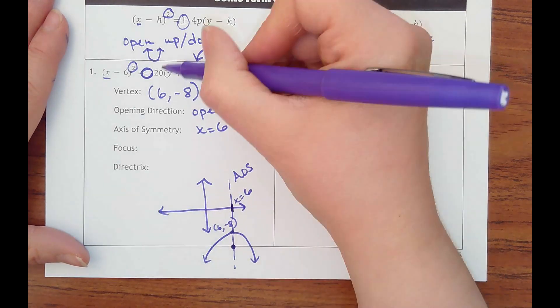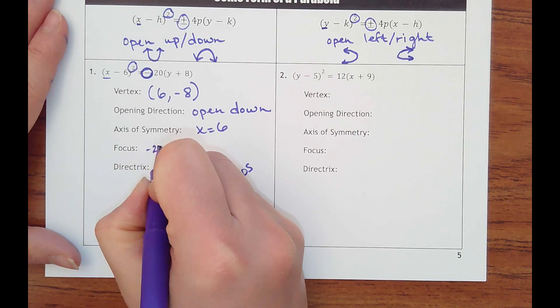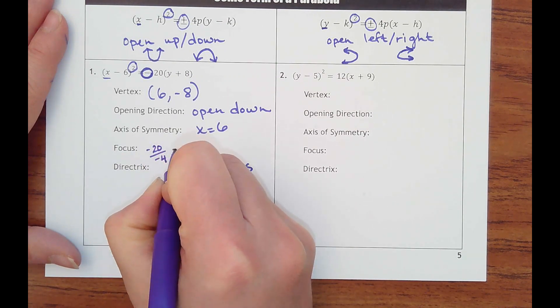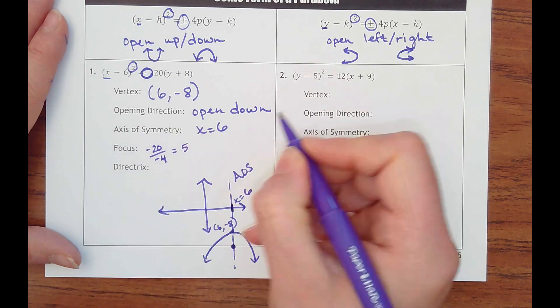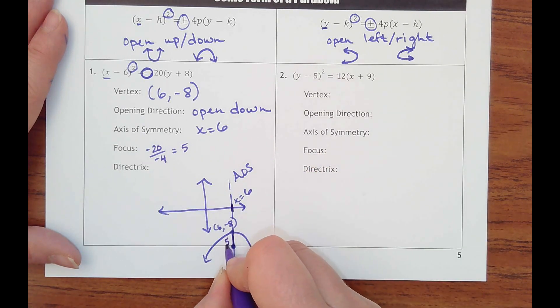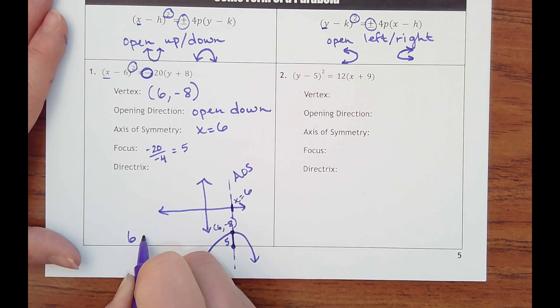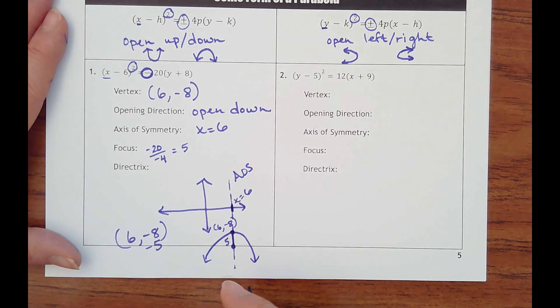The focus is going to be the point inside of here. We want negative 20 divided by 4, which would be a p-value of 5. So it would be 5 units inside of here. It's going to be taking the y-value of this point, 6, negative 8, and moving it down 5 more. So if I took the point 6, negative 8, and went down 5 more on the y-value, that would be at 6, negative 13.